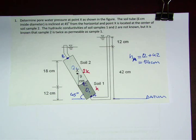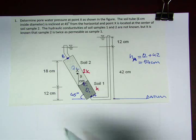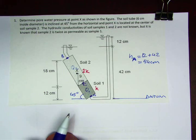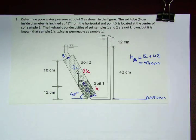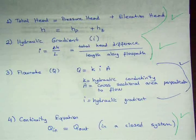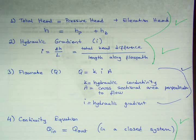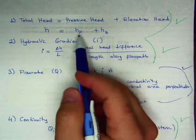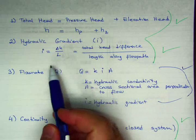Okay, we're going to solve this problem. In this problem we are asked to calculate the pore water pressure at point X right here. We're going to be using four equations that I discussed in the class to solve: the total head that's equal to pressure head and elevation head.